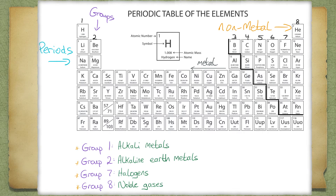Each group does have a name attached to it, so you need to know some of them. Group 1 are the Alkaline Metals, Group 2 the Alkaline Earth Metals, Group 7 the Halogens, and Group 8 are the Noble Gases.